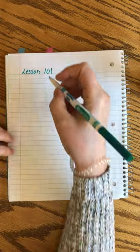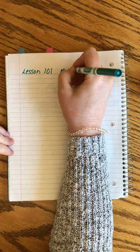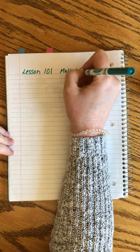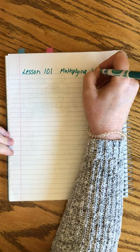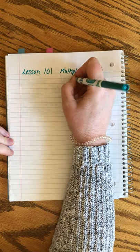Saxon Algebra 1 half lesson 101. Greetings, Caleb. We are getting ready to start something we're going to be doing for a long, long, long, long time, and that is multiplying with exponents.